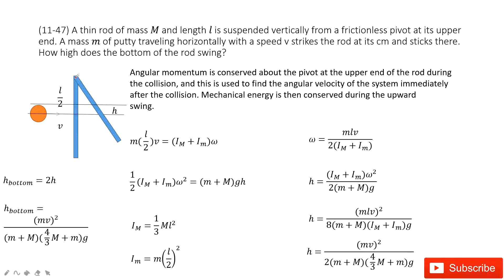In this system we have a thin rod with mass M and length l suspended vertically from a frictionless pivot at its upper end. A mass m is traveling horizontally and hits the long thin rod at the center of mass.